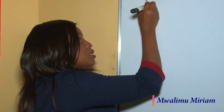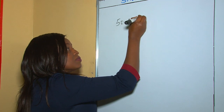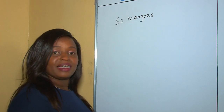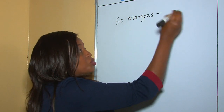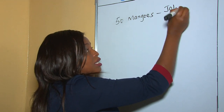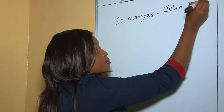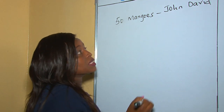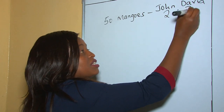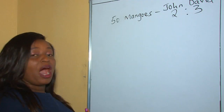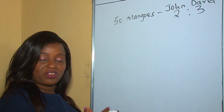For example, given that a teacher had 50 mangoes to share between two students — John and David — she shared in the ratio that John gets two and David gets three. How many mangoes did each of them get?